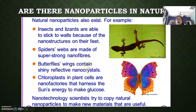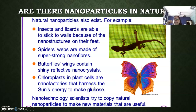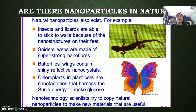The butterfly wings with their different bright, shiny colors are also due to the presence of reflective nano crystals. Chloroplasts present in green leaves are nothing other than small nano factories that absorb solar light and drive the process of photosynthesis, ultimately giving us glucose molecules. These are examples where the principles of nano science and nano technology must be understood to explain why and how these phenomena happen.